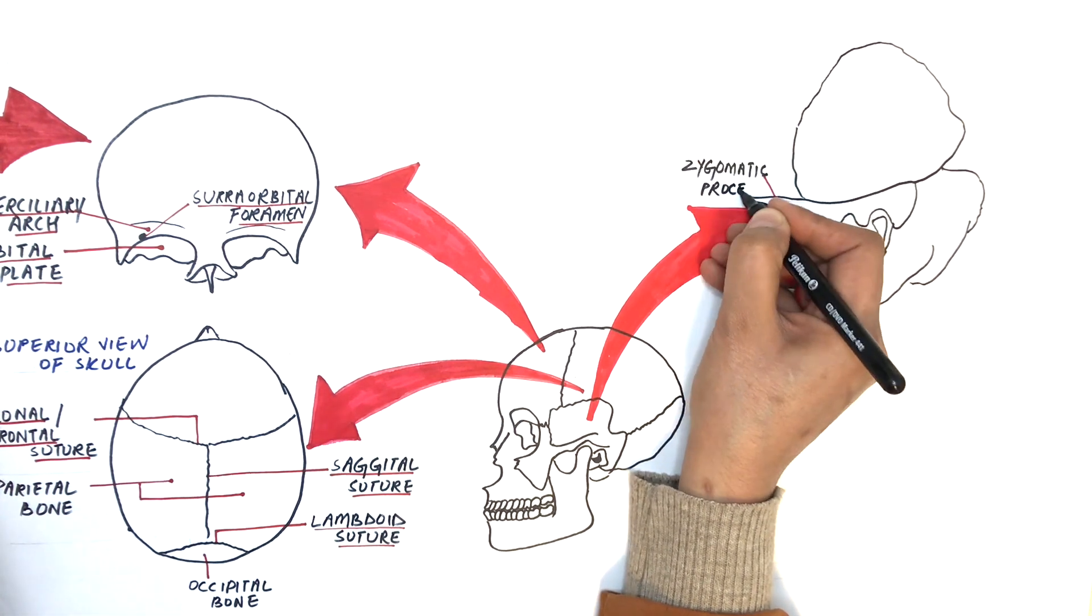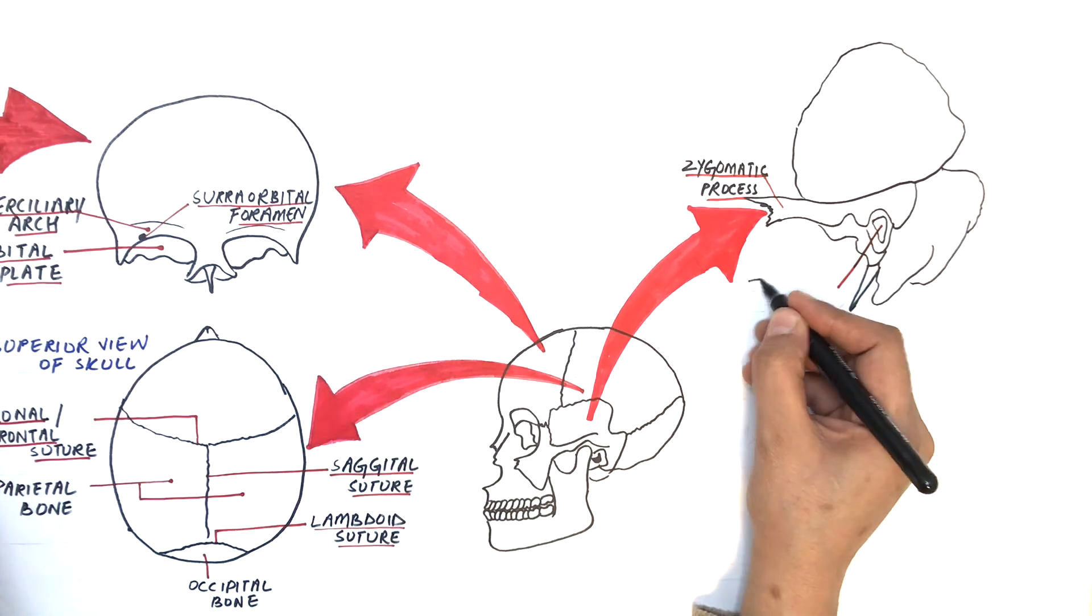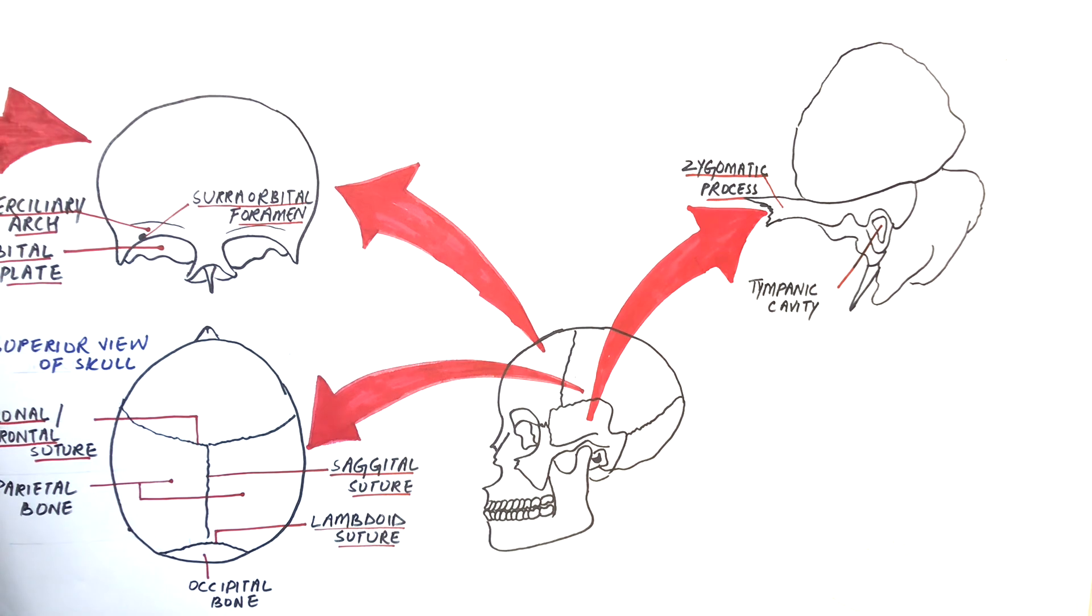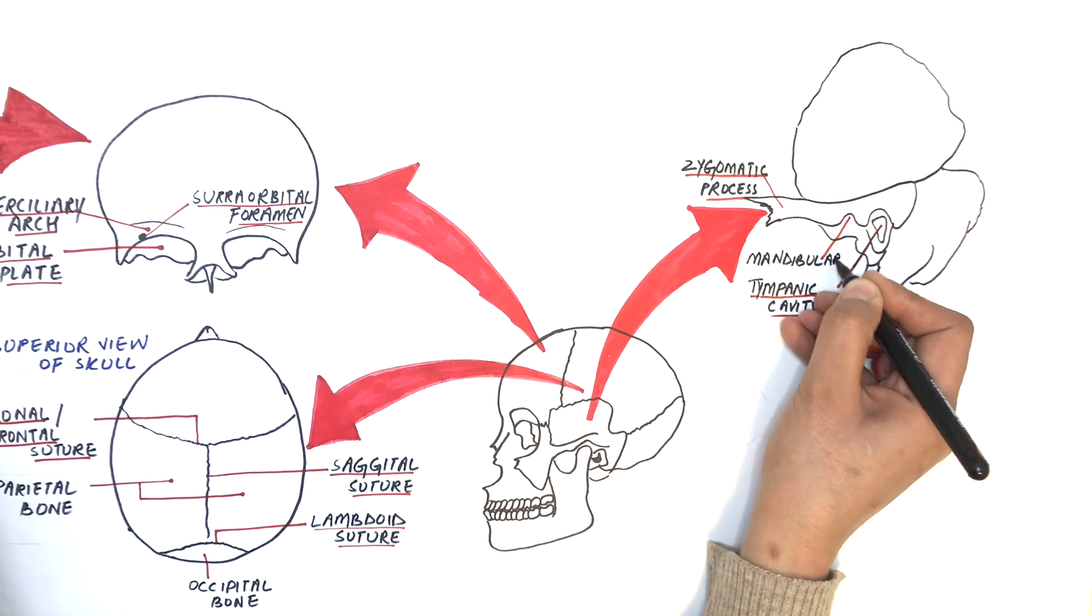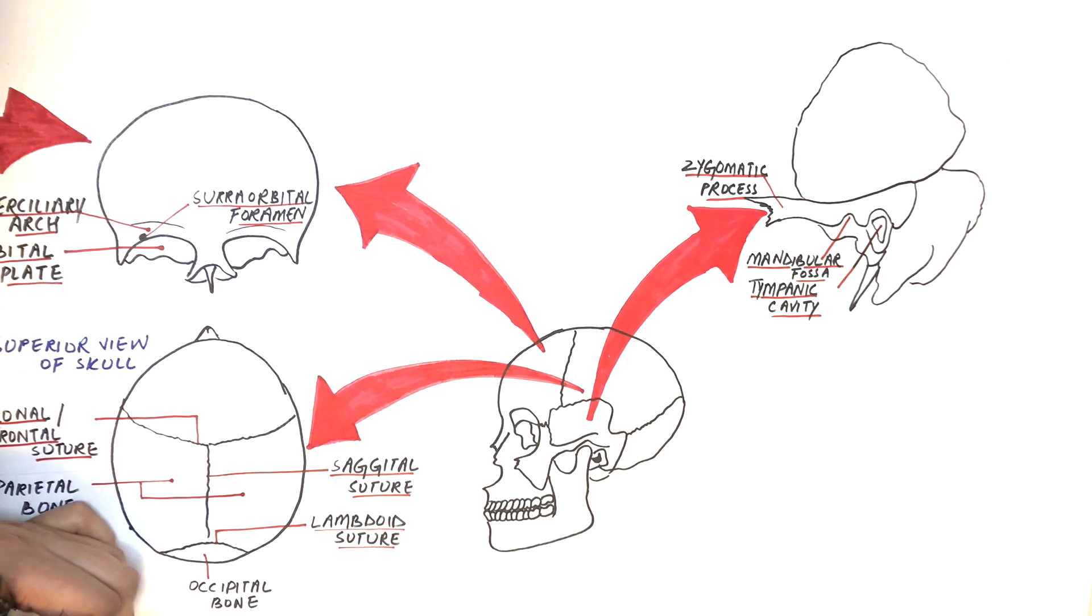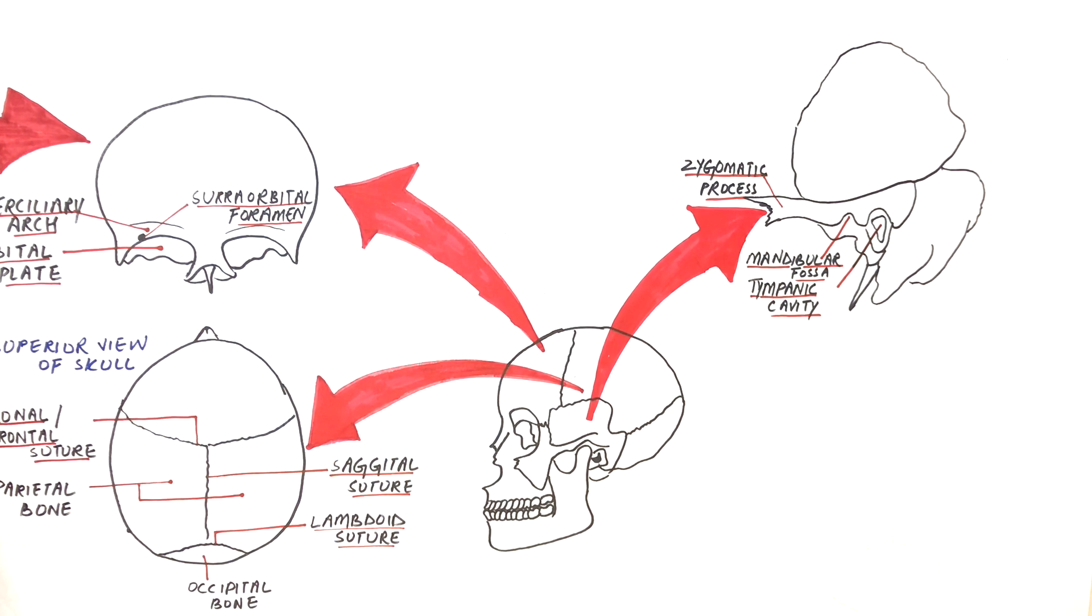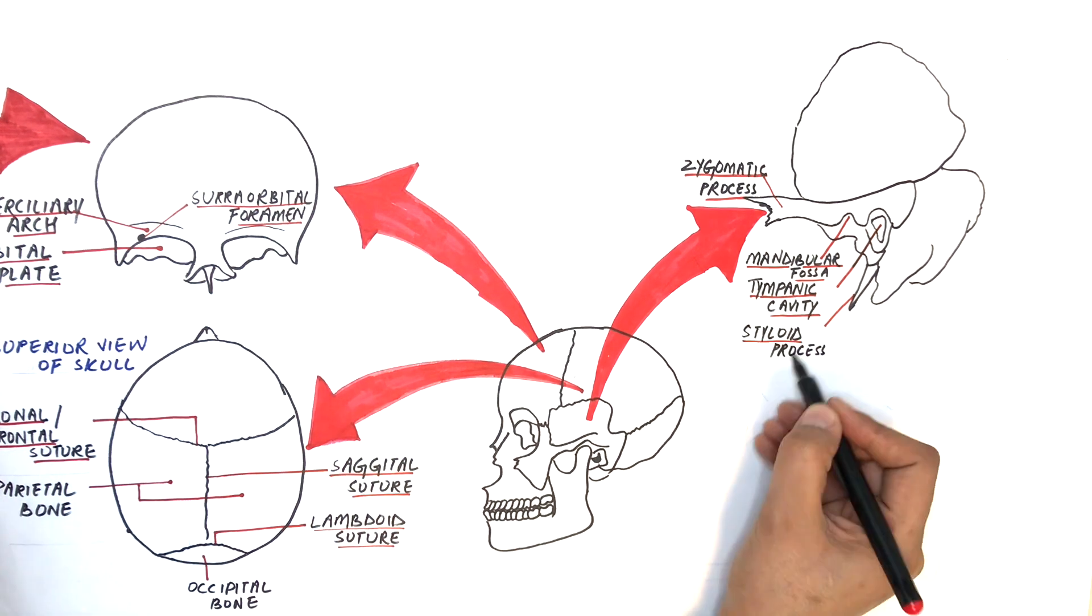From a lateral view, it has got a zygomatic process which attaches to the zygomatic bone and makes up the zygomatic arch, a tympanic or ear cavity, a mandibular or glenoid fossa where mandibular condyle attaches and forms the temporomandibular joint or TMJ, and a narrow bony projection called the styloid process where some muscles and ligaments attach.